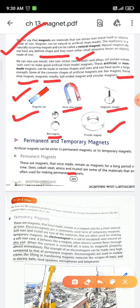Temporary magnets are the opposite. These are the magnets that once made do not remain as a magnet for a long period of time. In other words, these magnets remain as magnets only for a short interval of time.